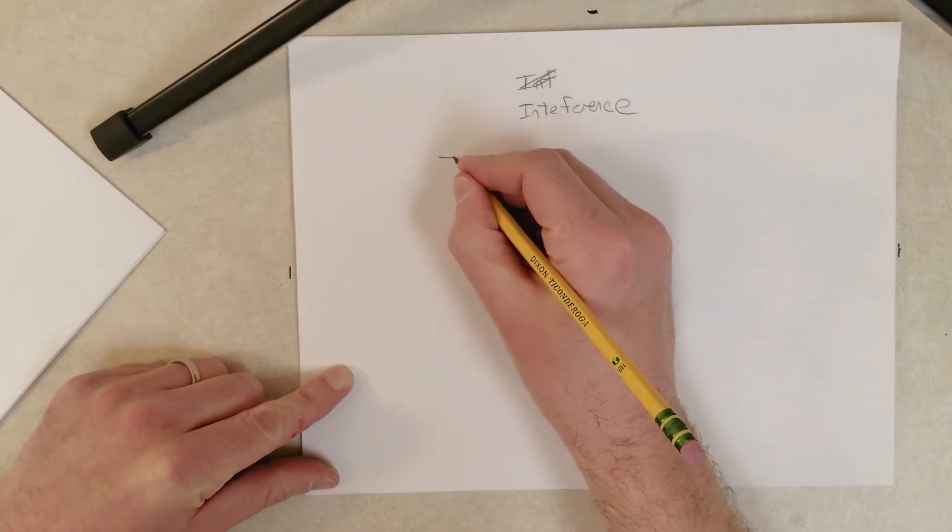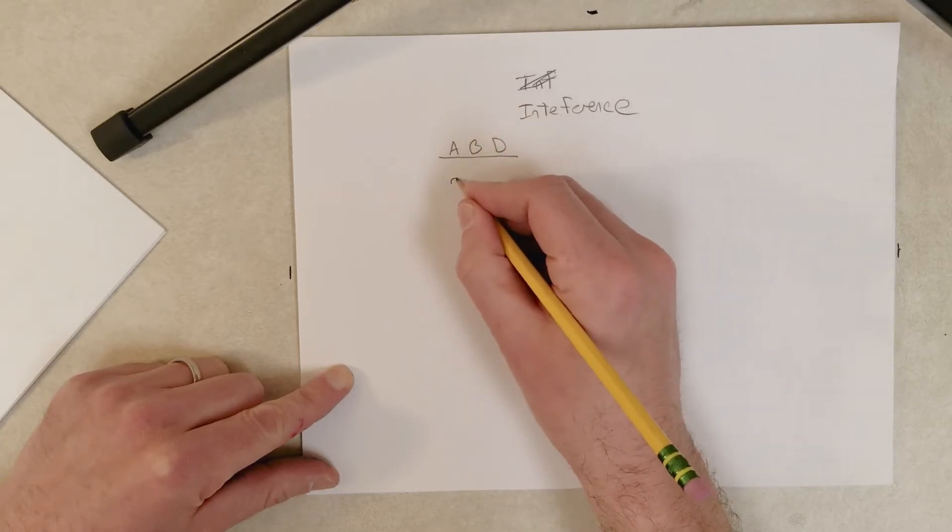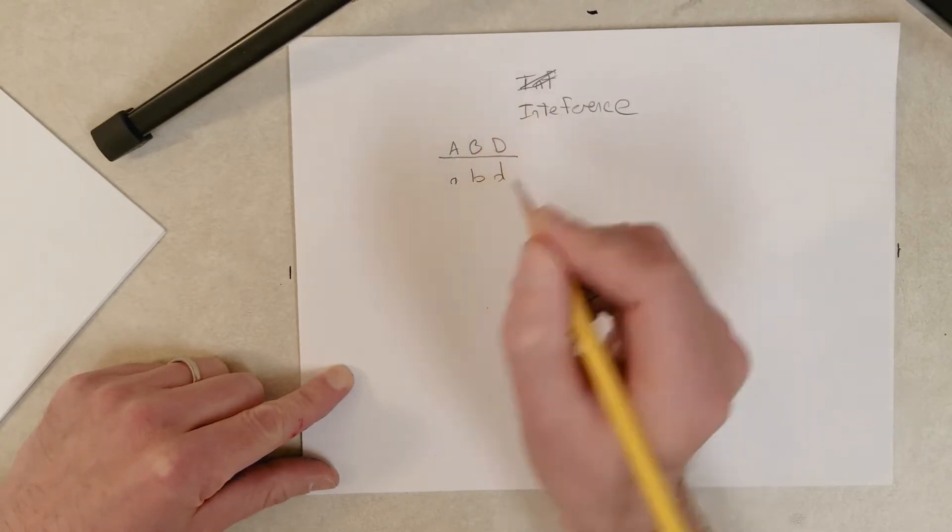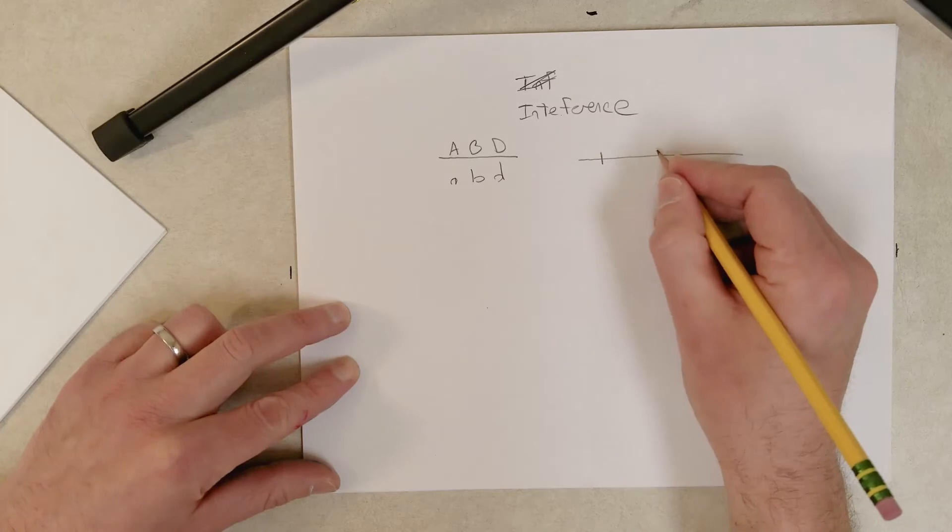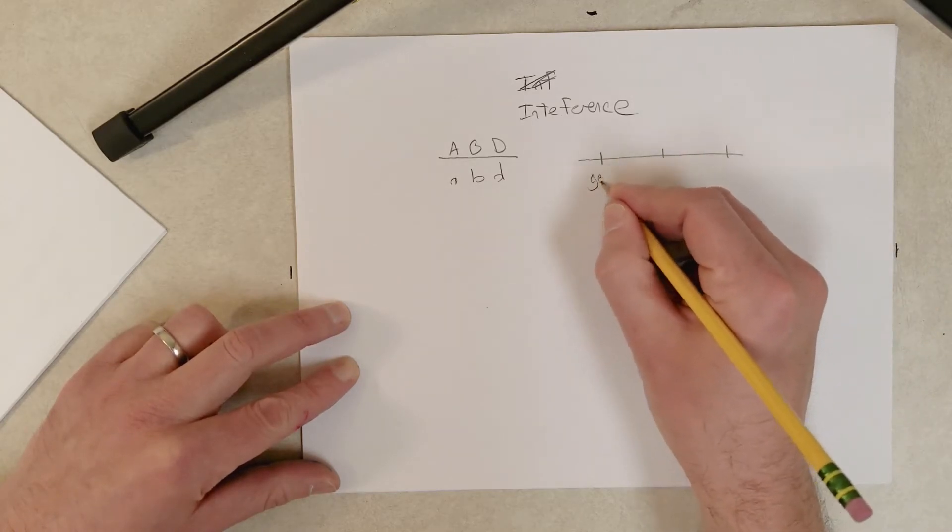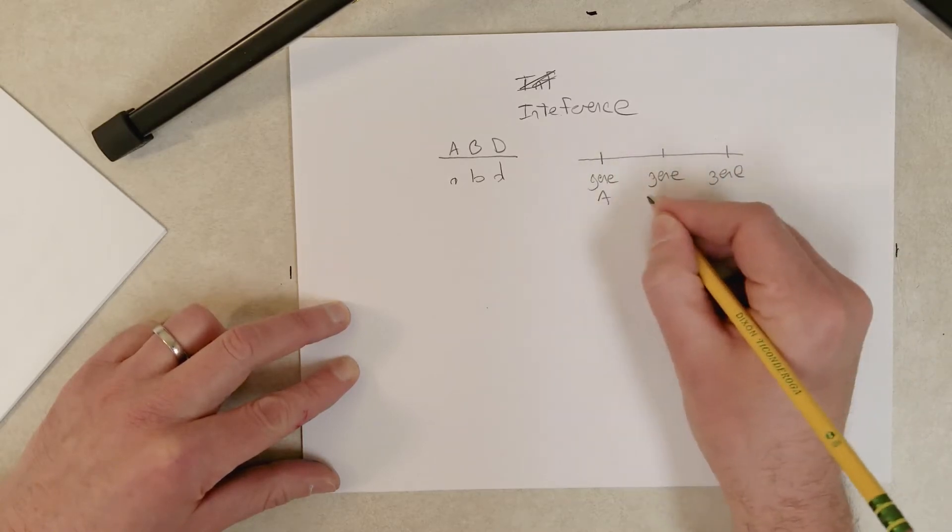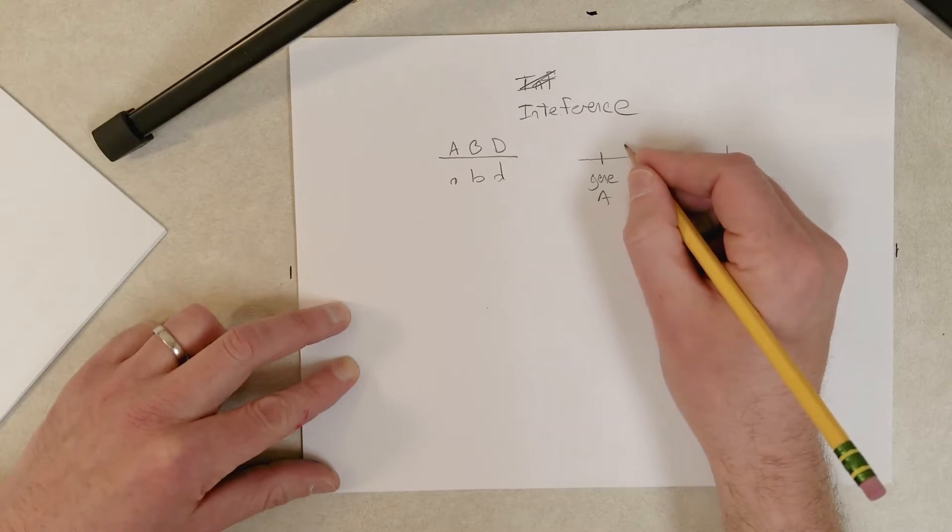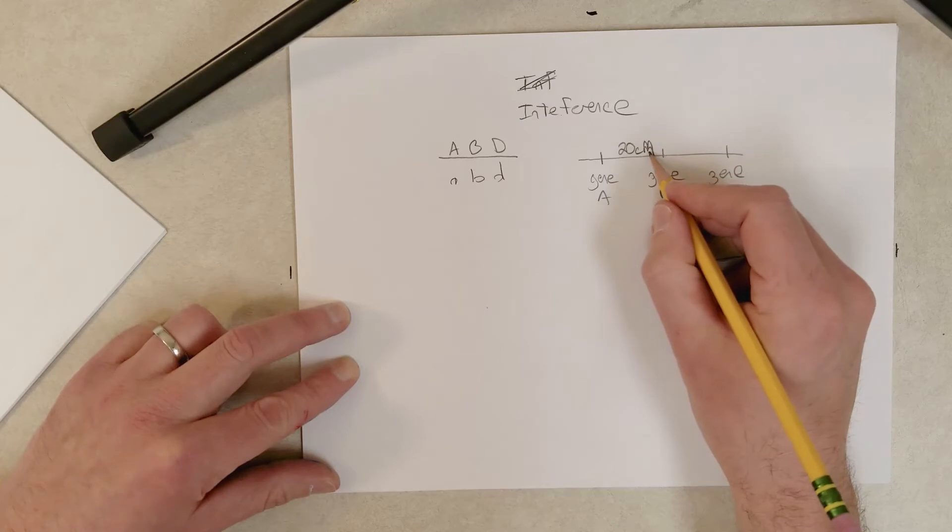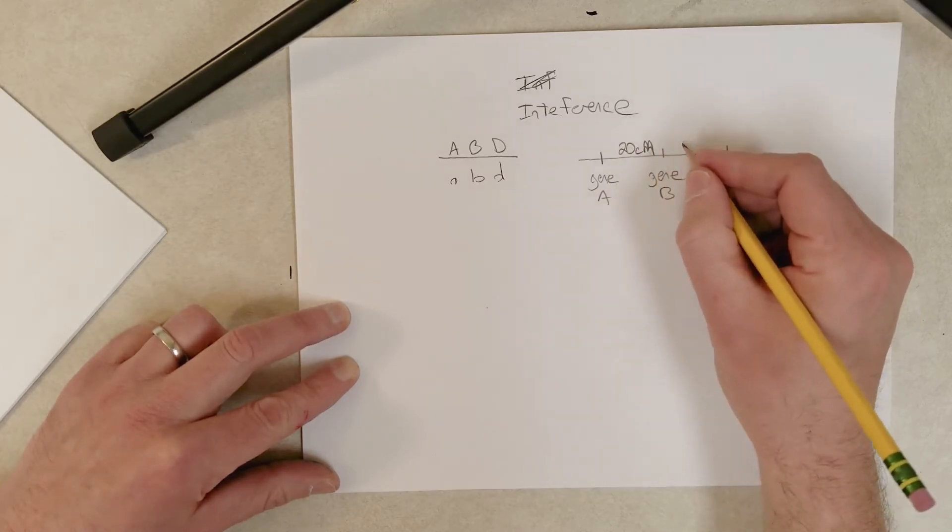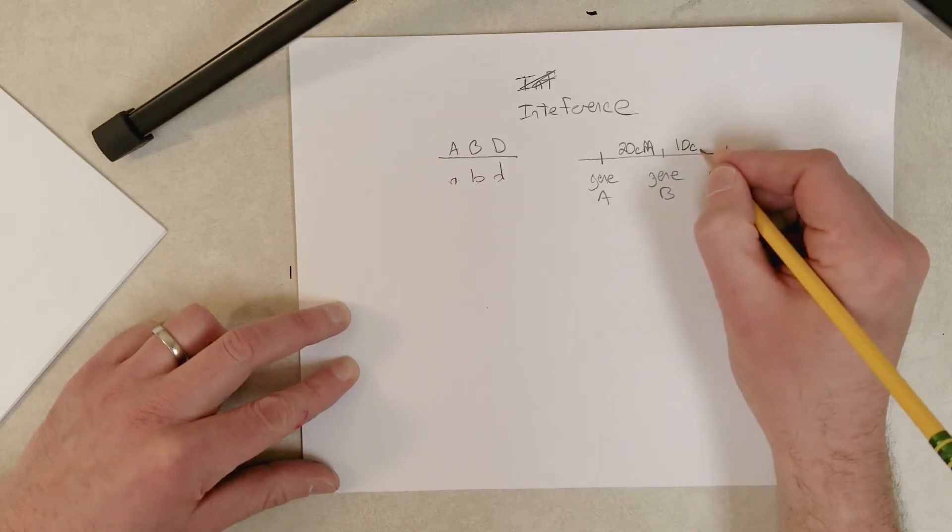So given a genotype, a generic genotype that looks like this, let's say a genetic map that looks something like this. Three genes: gene A, gene B, gene D. Let's say the distance here is 20 centimorgans - it's a capital M because Morgan is a name. And the distance between B and D is 10 centimorgans.